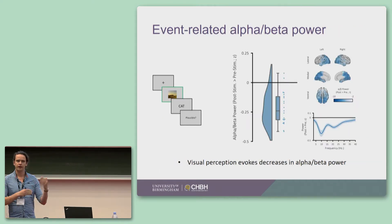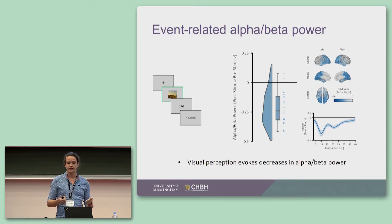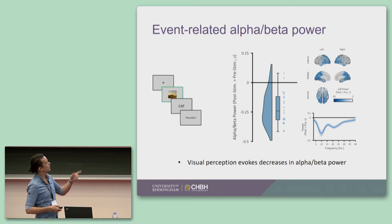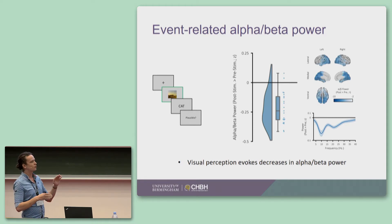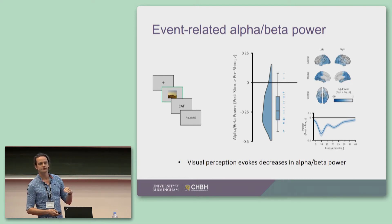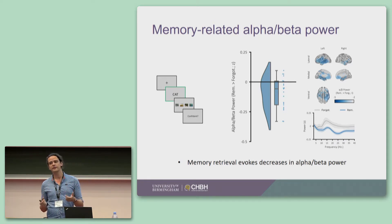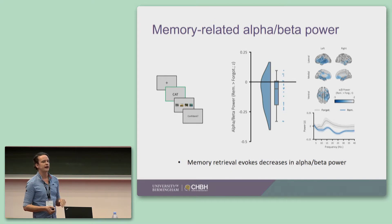We then moved on to alpha-beta power — the amplitude of the oscillation. First, we considered what happened when you're perceiving a video compared to a fixation window beforehand. As many people who've done EEG will know, you see a large drop in the amplitude of these alpha-beta oscillations, particularly in the occipital cortex. So when you're perceiving visual information, these alpha-beta oscillations drop. And when we look at memory, when you successfully remember the video, you see a large drop in alpha-beta power compared to when you don't remember it.